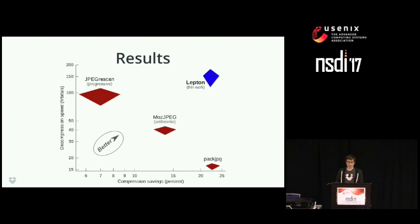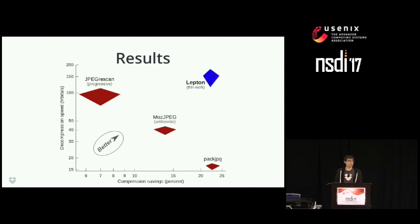Lepton stacks up well against related work. PackJPEG gets about 22% compression, but its speed is closer to 15 megabits per second rather than our target of 100. JPEG Rescan attains our target speed but only gets about 6% compression by rearranging coefficients to get longer runs of zeros. Lepton uses arithmetic coding and achieves 22% compression at 150 megabits per second using various low-level CPU optimizations and multi-threading.